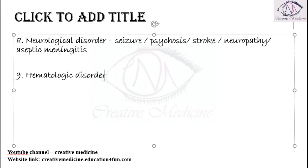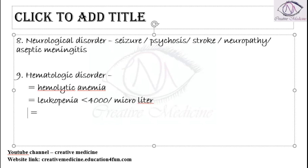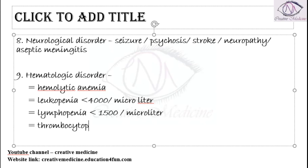The ninth criterion is hematological disorder. This includes hemolytic anemia, leukopenia where leukocytes are less than 4000 per microliter, lymphopenia where lymphocytes are less than 1500 per microliter, or thrombocytopenia where platelets are less than 1 lakh per microliter. These are the hematological disorders.